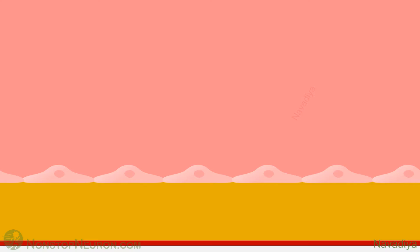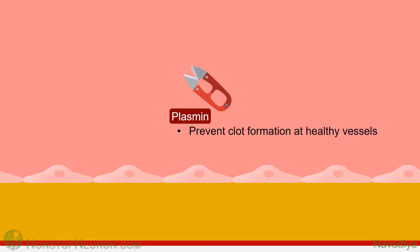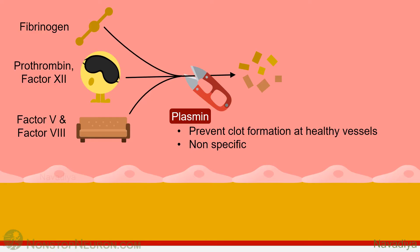But there are still many points to see in this video. Apart from dissolution of clot, plasmin also prevents clot formation in healthy vessels as it degrades fibrin that is inappropriately synthesized in circulation. It is also a rather non-specific enzyme and breaks down some clotting factors like fibrinogen, prothrombin, factor 12, 5, and 8. So if it becomes excessively active, levels of these factors might drop, which would hamper normal coagulation. It is therefore important to limit its activity at healthy sites and mainly confine it to the clot.